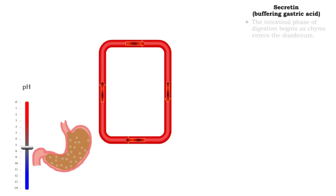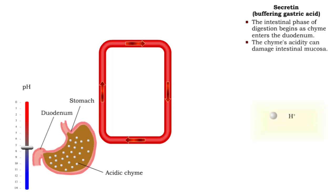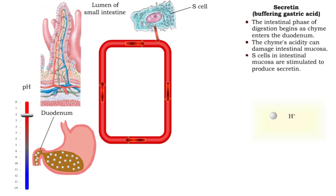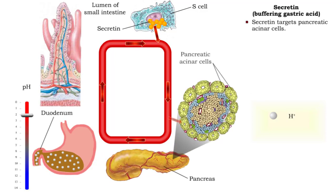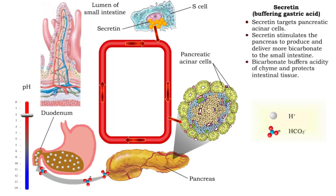The hormone secretin affects the intestinal phase of digestion. Acidic chyme entering the duodenum is potentially damaging to intestinal mucosa. To counteract the acidity, S cells in the intestinal mucosa release secretin into the bloodstream. Secretin targets acinar cells in the pancreas. The pancreas then produces and delivers more bicarbonate to the small intestine, buffering the gastric acid in the chyme and protecting intestinal cells.